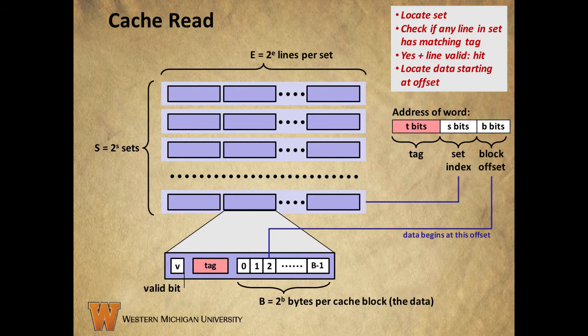So let's look at how we find a particular word that is requested from the cache. The cache gets the address of a word that it needs to move to the CPU registers, and that address is broken into fields. The tag field contains lowercase t bits. The set index field is lowercase s bits long and refers to the set that contains the data. And finally the block offset field contains lowercase b bits and tells us where the word in question starts in the data block.